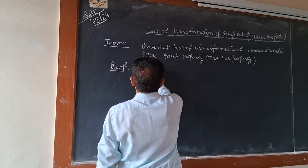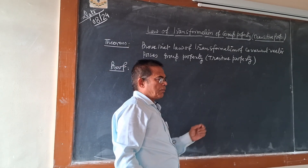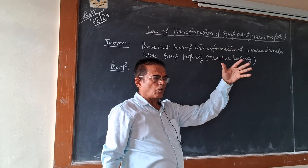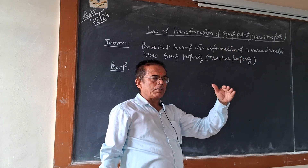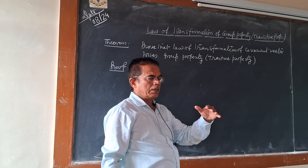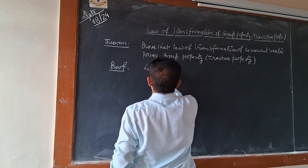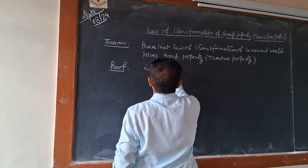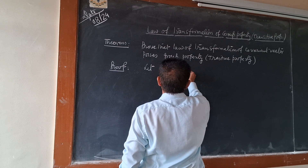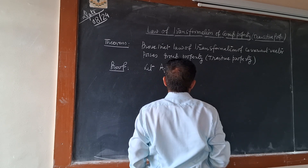Contravariant vector में केवल एक index होती है — super index होती है. Covariant vector में एक index होगी और sub index होगी, नीचे होगी. So, let A_i, Ā_i, A̿_i — तीन covariant vectors लेंगे.